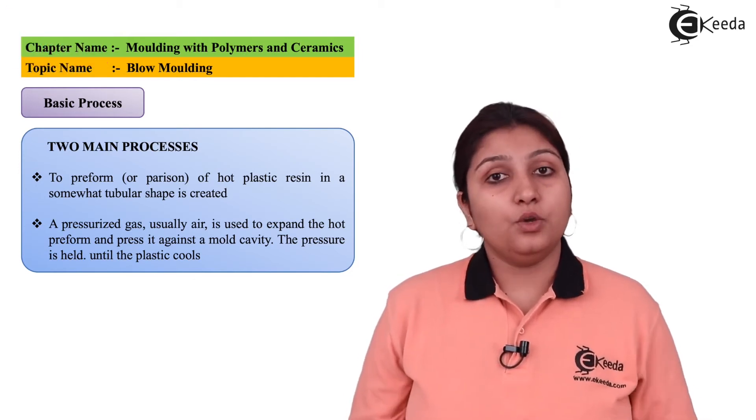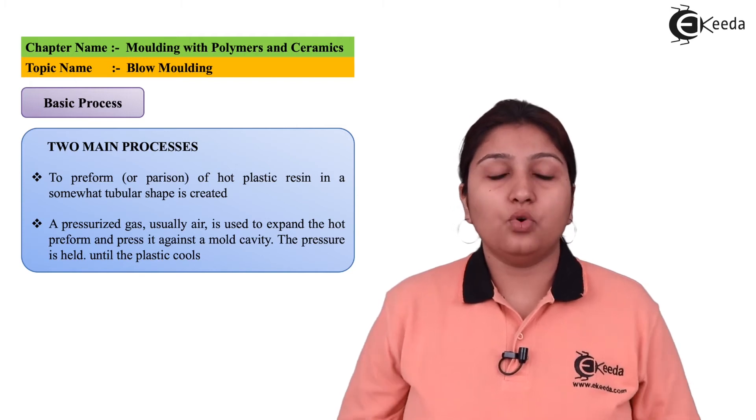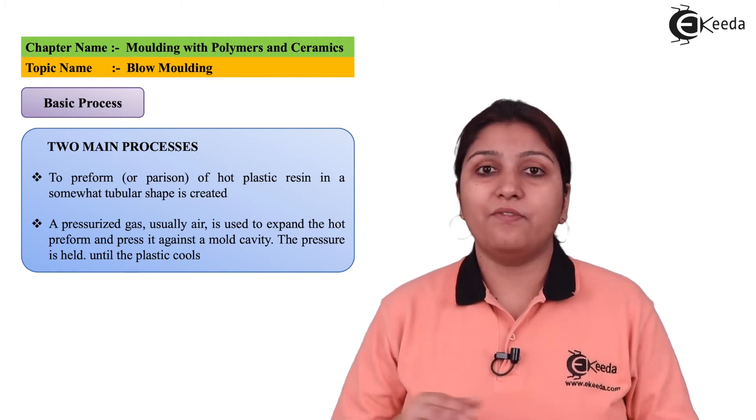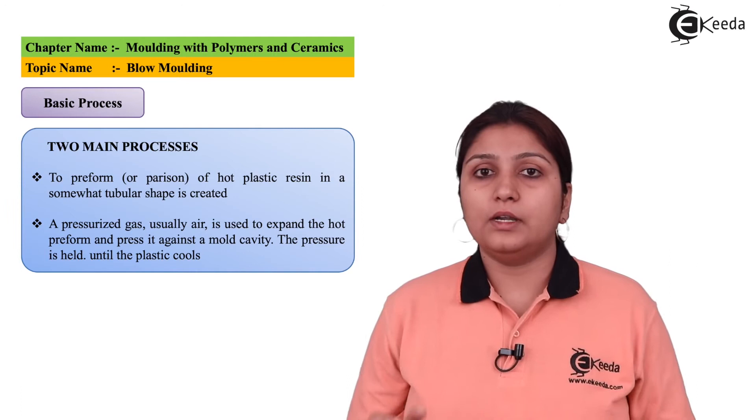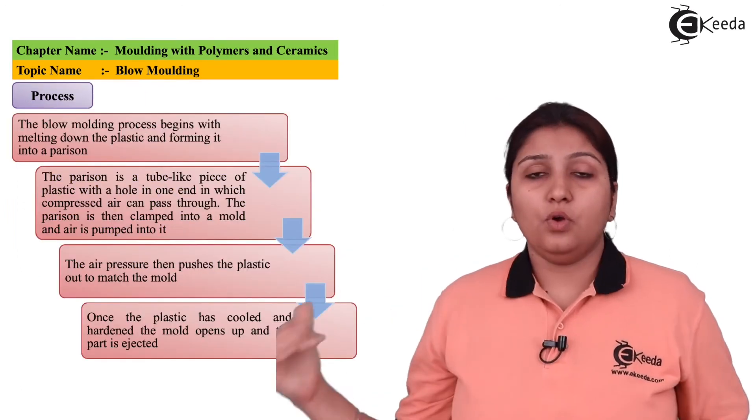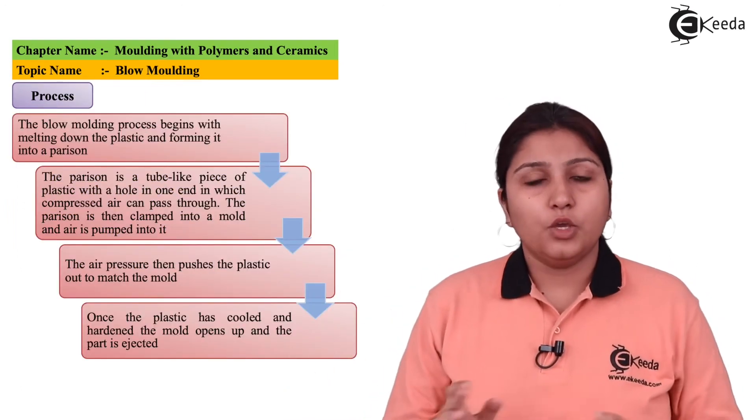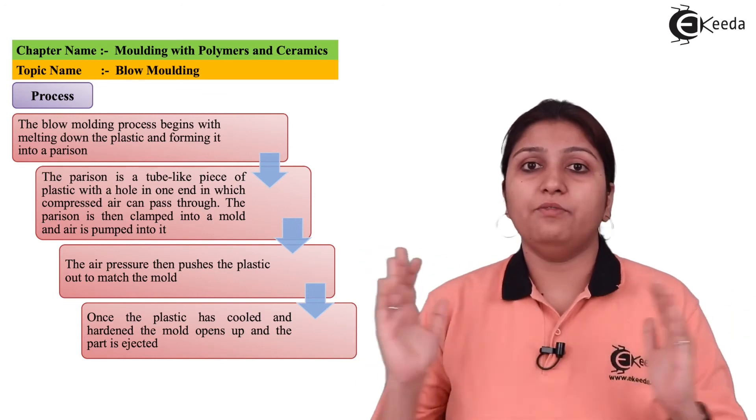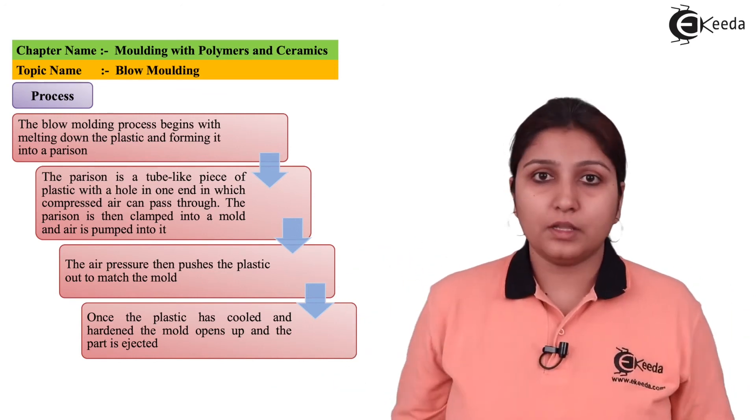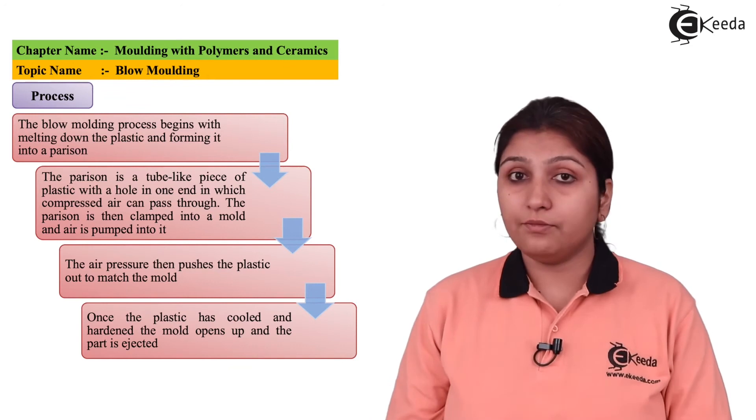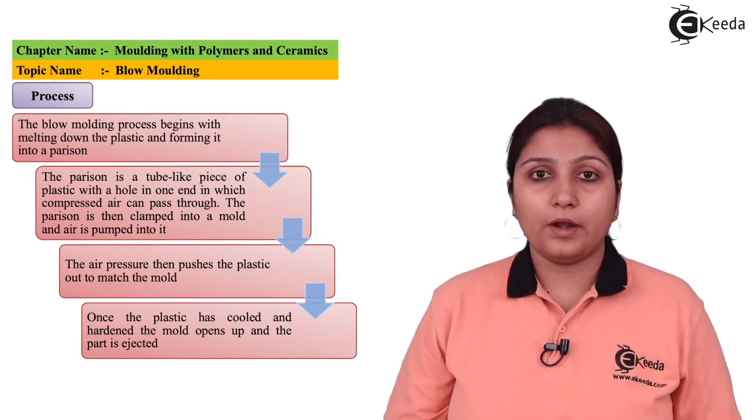The second step is you need pressurized air so that the parison can inflate easily and reach your die cavity. In this process, you are going to keep your die close to each other. It should not be far away so that parison cannot reach there. It should be close enough to get the shape of your required object.